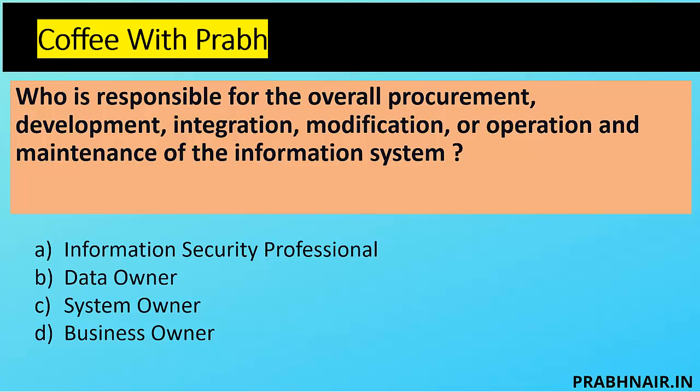Next coffee shot: Who is responsible for the overall procurement, development, integration, modification, operation, and maintenance of the information system? The first keyword is 'information system,' not data. The question is not talking about anything related to information security. Do not involve security every time — this question is simply about procurement, development, and integration.